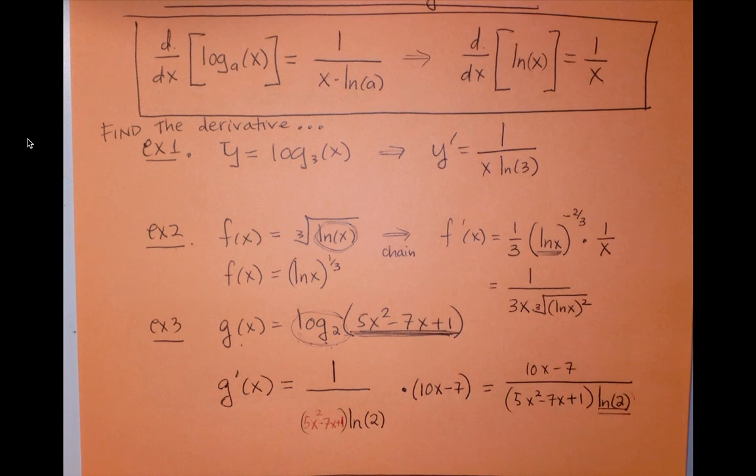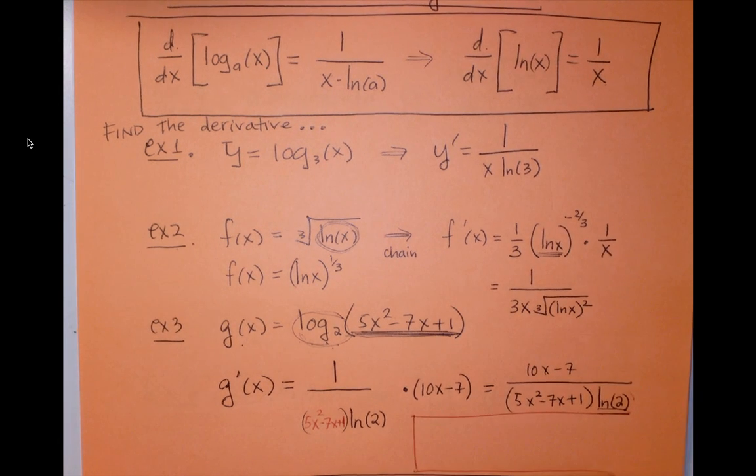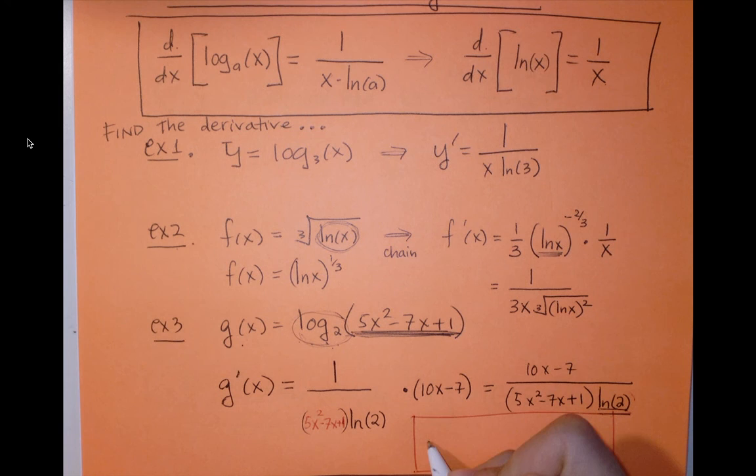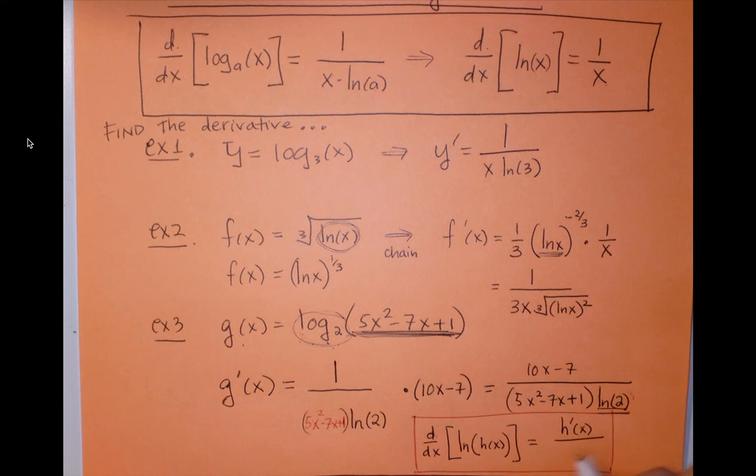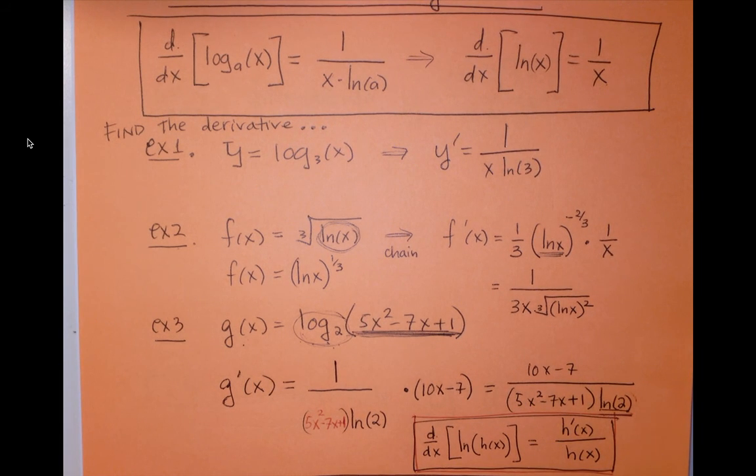So the basic pattern that you want to look out for is, let me just give you a quick example. Derivative of, let's say, the natural log of some function h of x. Notice how it has the form h prime of x over h of x. So this is something that will come up a lot later in this course, this pattern that you see here.